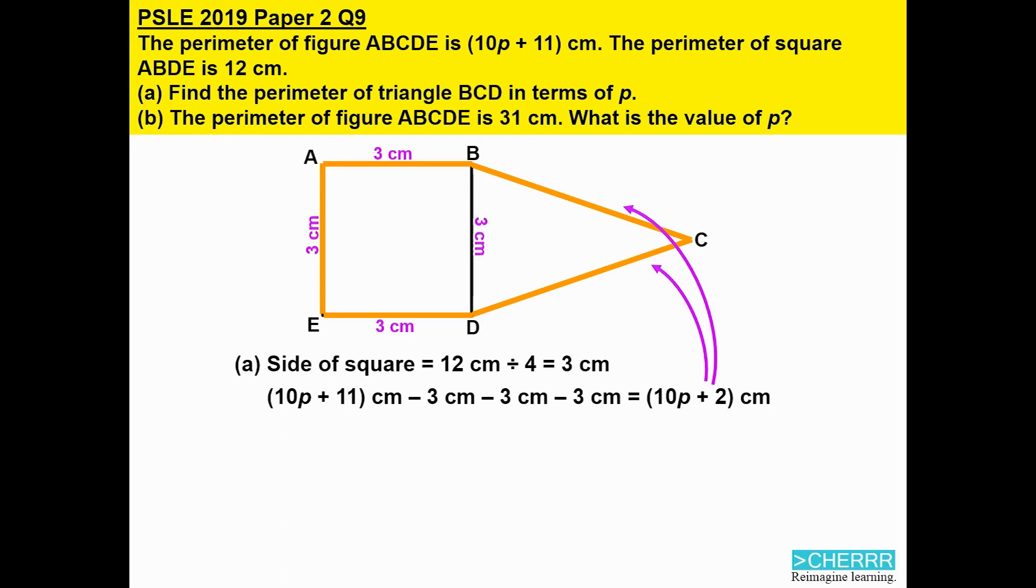So that we will arrive at the two long lines that form part of the triangle. That will be (10p + 2) centimeters.